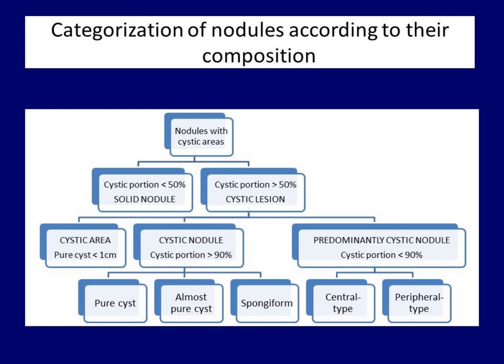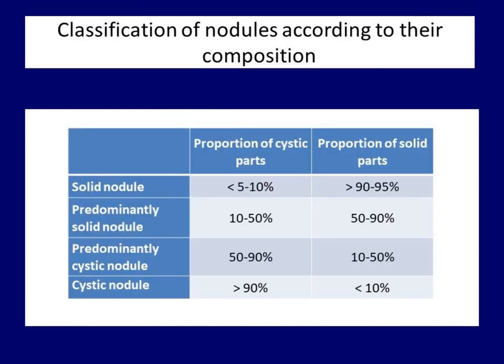If a nodule is predominantly cystic, it is worth making a distinction whether the nodule is peripheral or central type. Most malignant cystic nodules belong to the peripheral subtype. In this table, I summarize the classification of nodules according to the possible combination of cystic and solid content. Let's see some examples of the different subtypes.